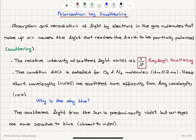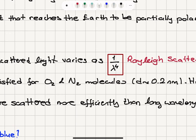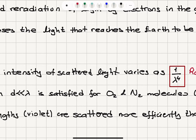Another polarization mechanism is polarization by scattering. Absorption and re-radiation of light by electrons in gas molecules that make up air causes the light reaching Earth to be partially polarized. Because the light is partially polarized, there is a change in intensity — the relative intensity of scattered light varies as one over lambda to the fourth power.